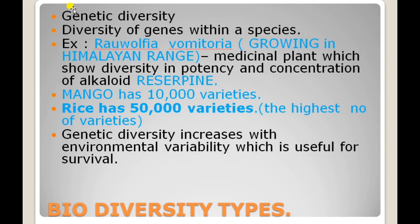Biodiversity is divided into three types: genetic diversity, species diversity, and ecological diversity. Let us learn them one by one. Genetic diversity refers to diversity at the level of genes.